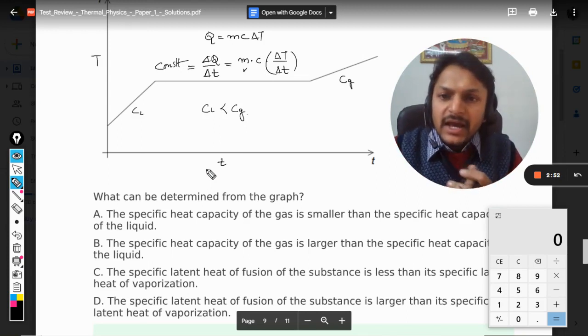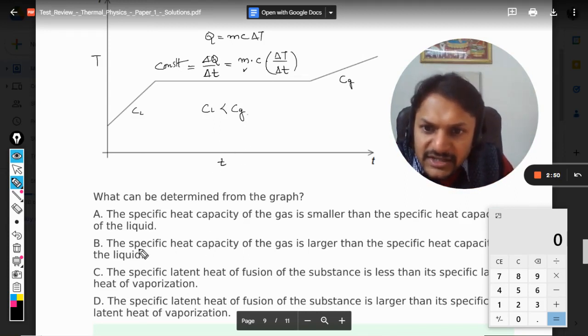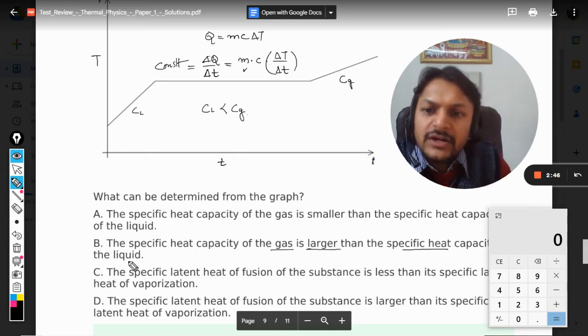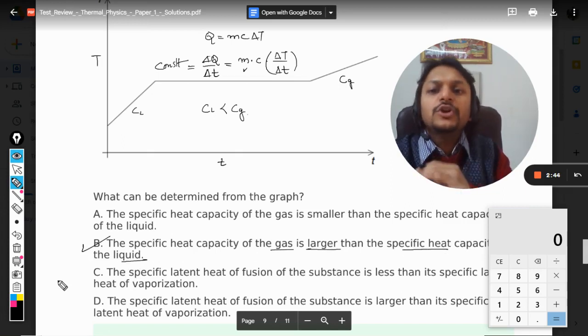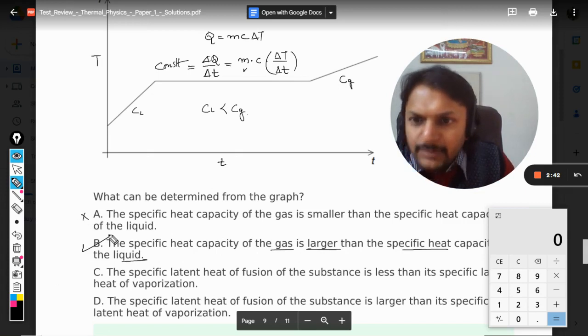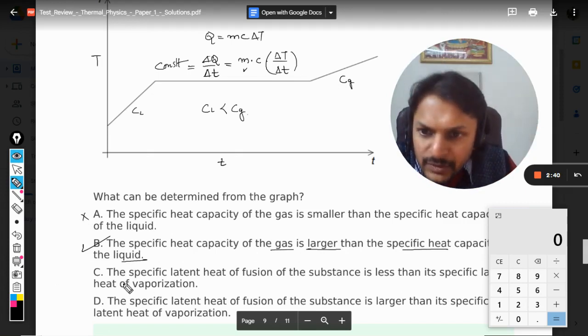And what will be this? The specific heat capacity of gas is larger than the specific heat capacity of liquid. So option B is absolutely correct. A is completely wrong.